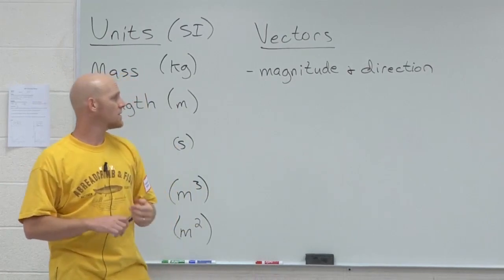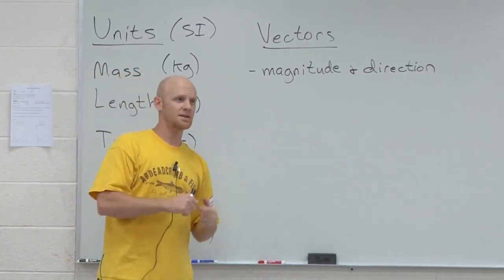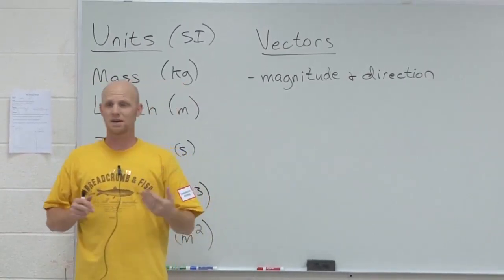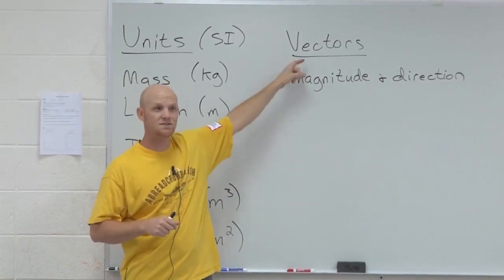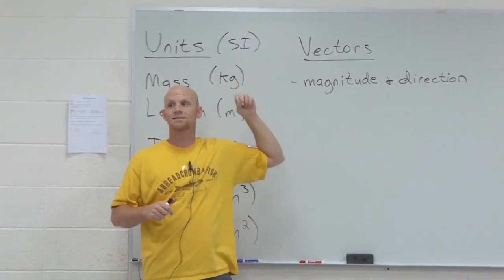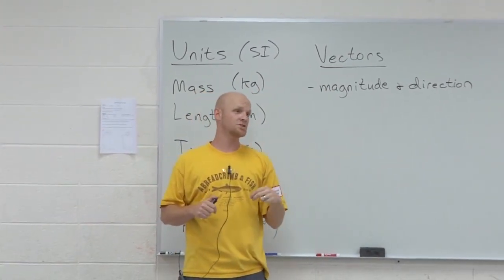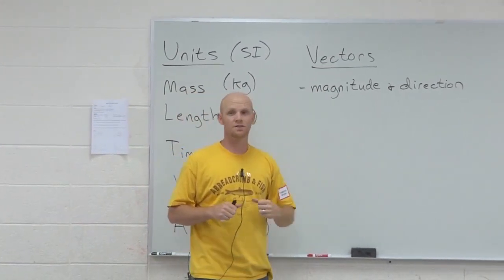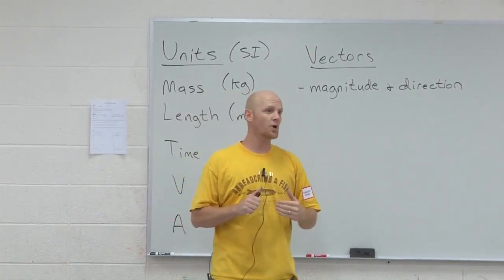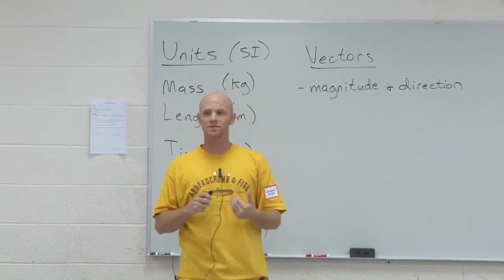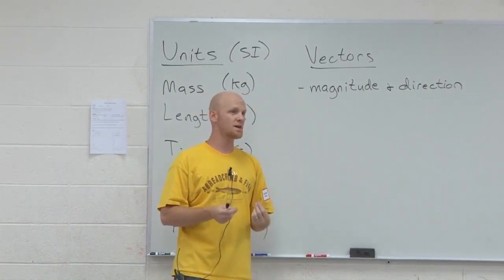We'll talk about the difference between speed and velocity in a little bit. Speed is just how fast you're going, but velocity is a vector — it's how fast you're going and what direction. Are you going to the left, to the right, up, down, forward, backward, north, south, east, west? Those are directions you might see.